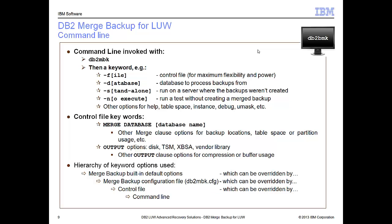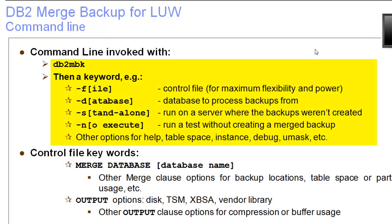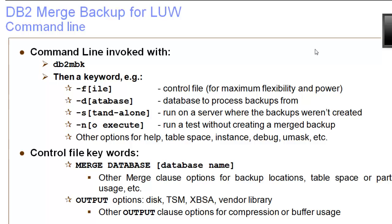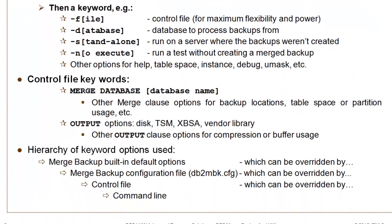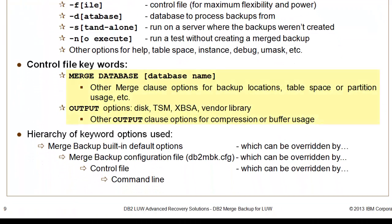The Merge Backup command line is very simple: DB2MBK, a file that gives you the control file information, and the database you're going to merge to, and then a couple of flags — one that says whether you're running in standalone, and one that says whether you're running NoExecute. NoExecute is basically a test run without actually doing the merge itself. It's great for syntax checking and to make sure all of your backups are available.